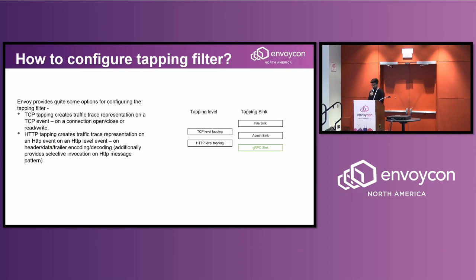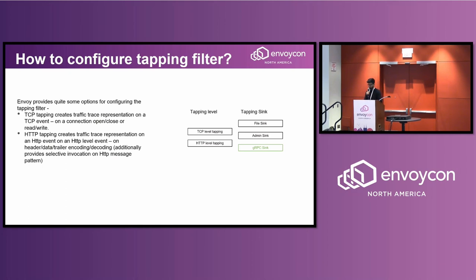There are two basic methods by which you can get a tap within Envoy. One is via TCP tapping and the other is via HTTP tapping. TCP tapping creates traffic trace representations on a TCP event — that is, on connection open or close, or on a connection read or write. HTTP tapping creates traffic trace representations on an HTTP event — on header, data, trailer, encoding, or decoding sequences. These basically operate as callbacks, and the main function of tapping is to send these internal representations whenever these callbacks are invoked.